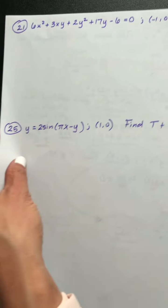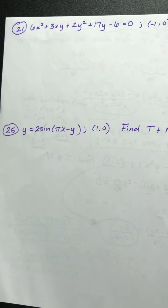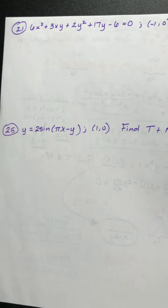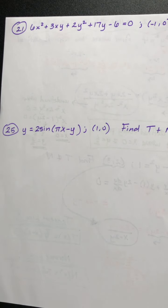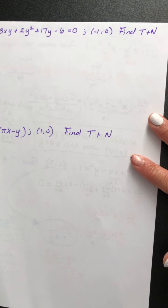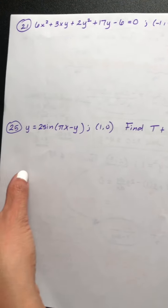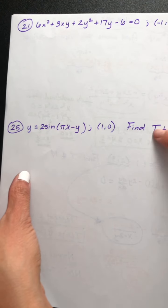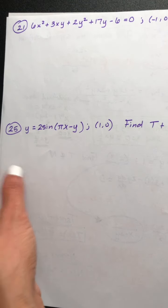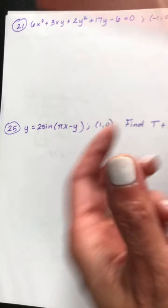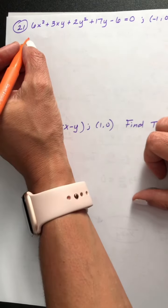Number 21. We have to implicitly differentiate at the point negative 1, 0, so we can find the slope and then the equations of the tangent line and the normal line. We'll also be finding t and n on number 25 as well. So let's differentiate.